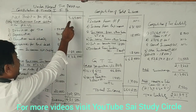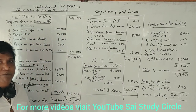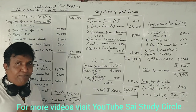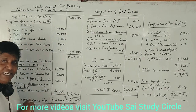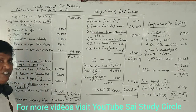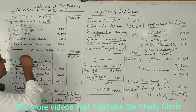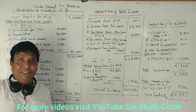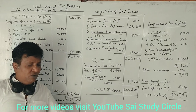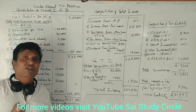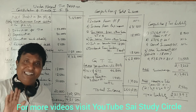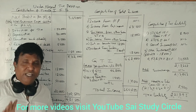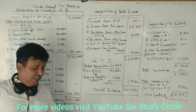First, we take the net profit. In calculating the computation of taxable income from business, after taking net profit we add certain items and deduct certain items. The first addition item is non-business expenses debited to the profit and loss account. You find these on the debit side of the P&L account. When reading the debit side items, check whether we have any non-business expenses — consider only non-business expenses and ignore business expenses.